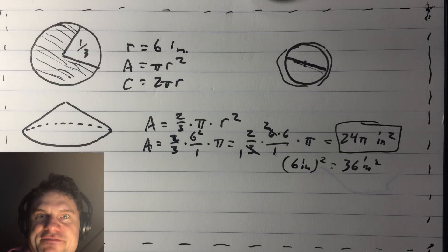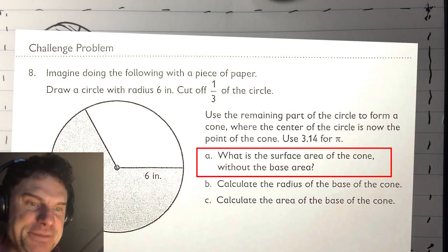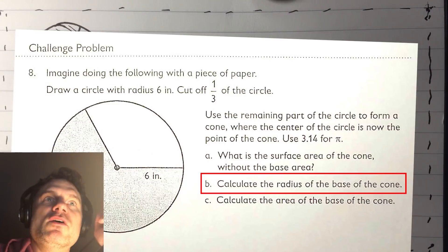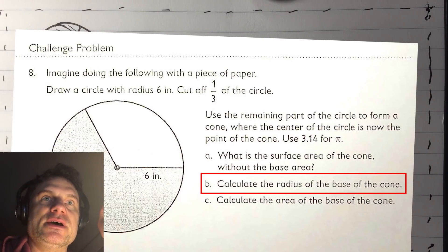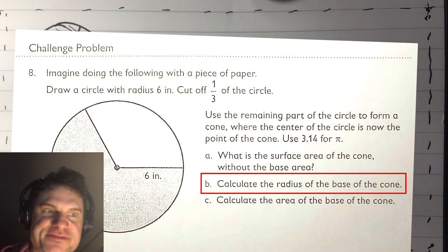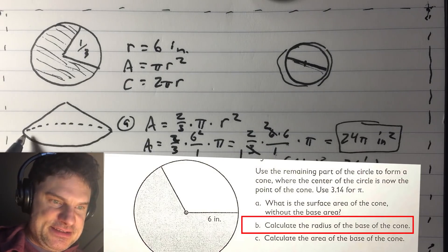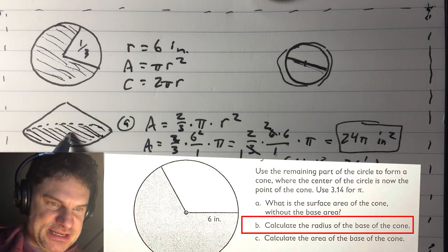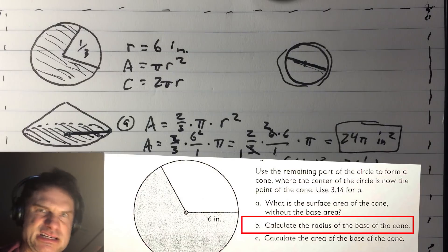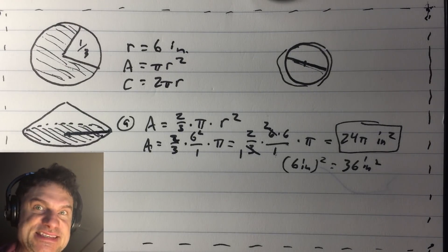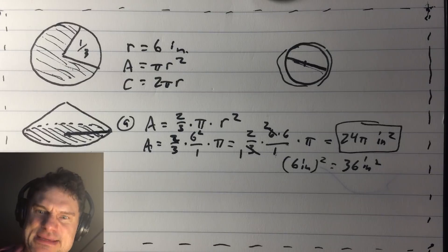B: calculate the radius of the base of the cone. What is the base of the cone? Well, it is this portion down here, and we need to find the radius of this. Do not worry — they always give you all the info. So let us remember something.